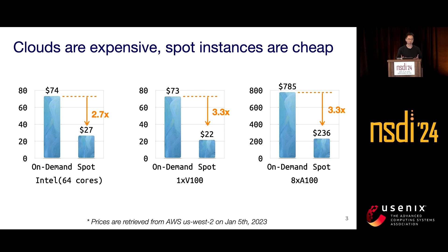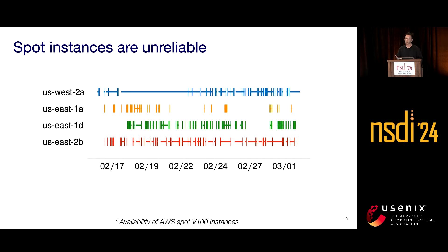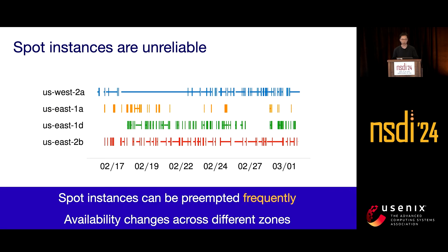So why don't we just ask everyone to use spot instances to save the cost? The problem is, in the clouds, spot instances are also annotated as preemptible, which means the instance can be interrupted and taken back by the cloud providers. We collected availability traces on AWS spot V100 instances across different zones. The horizontal lines are the time the instance is available, while the vertical lines are the preemptions. As we can observe, the instance can be preempted very frequently, and the availability varies across different zones. In order to handle these preemptions, a user running jobs on spot instances has to have a system to monitor and recover them.